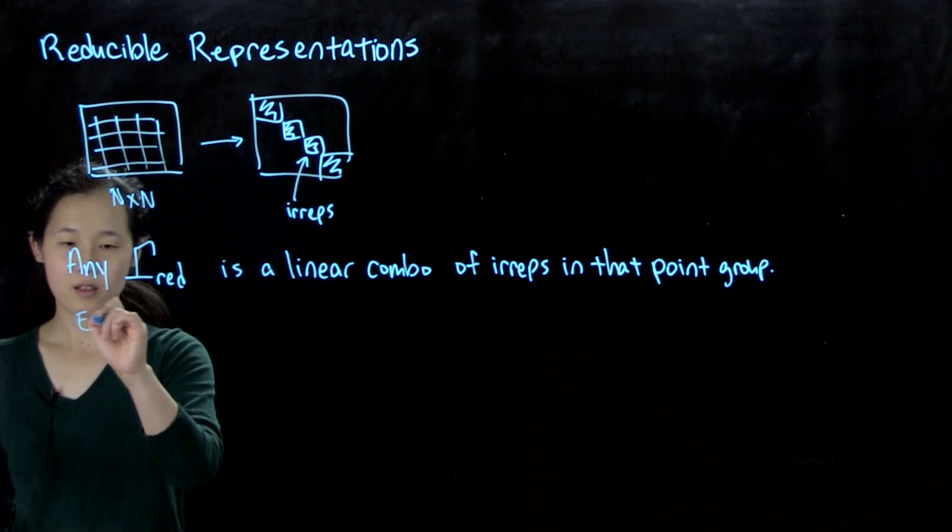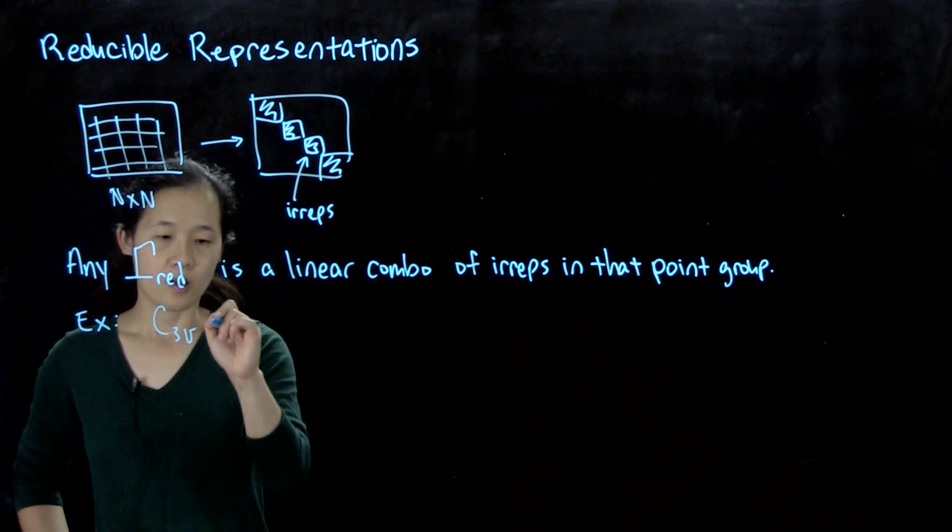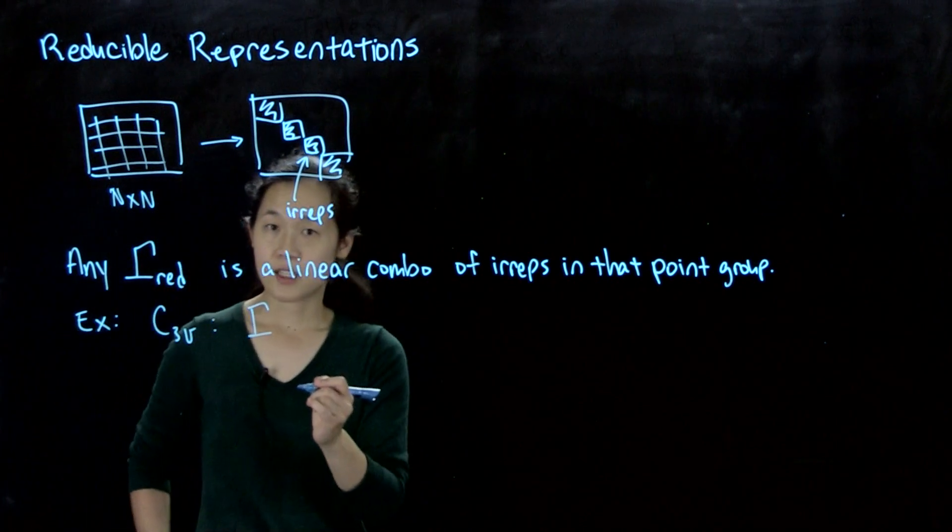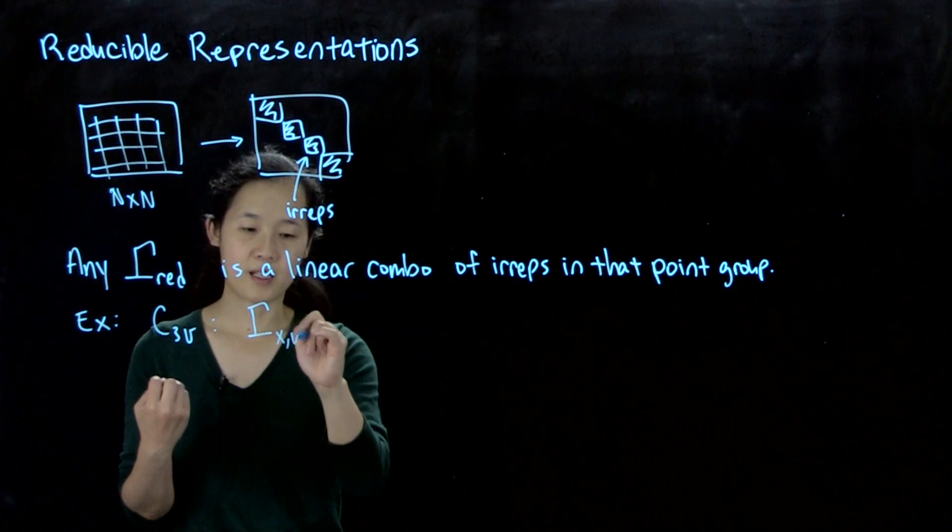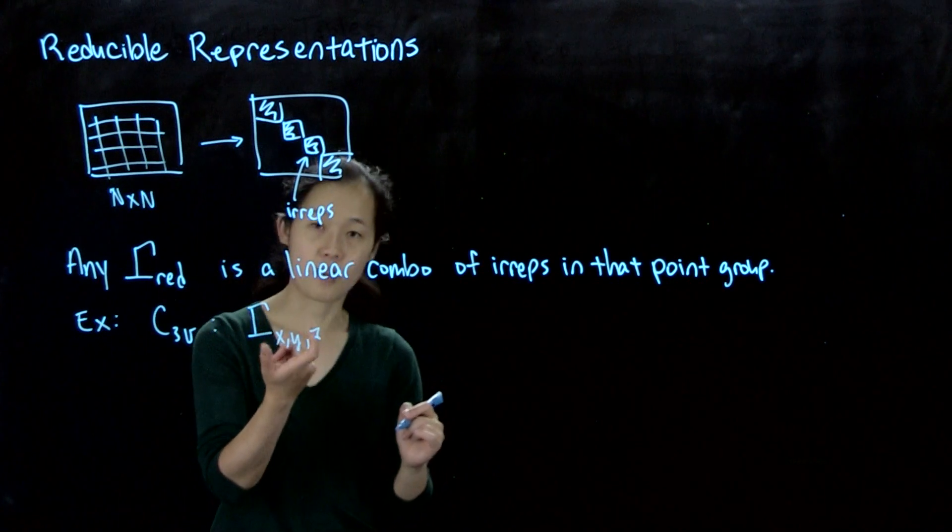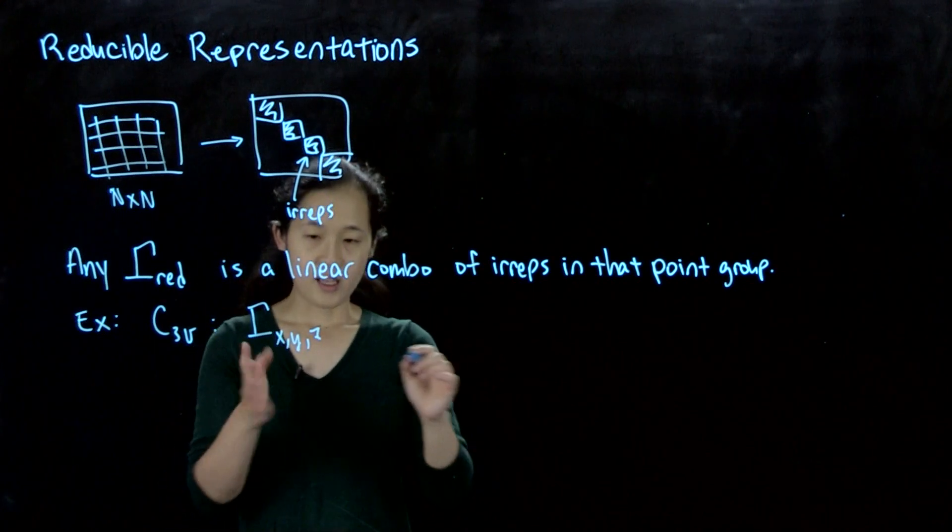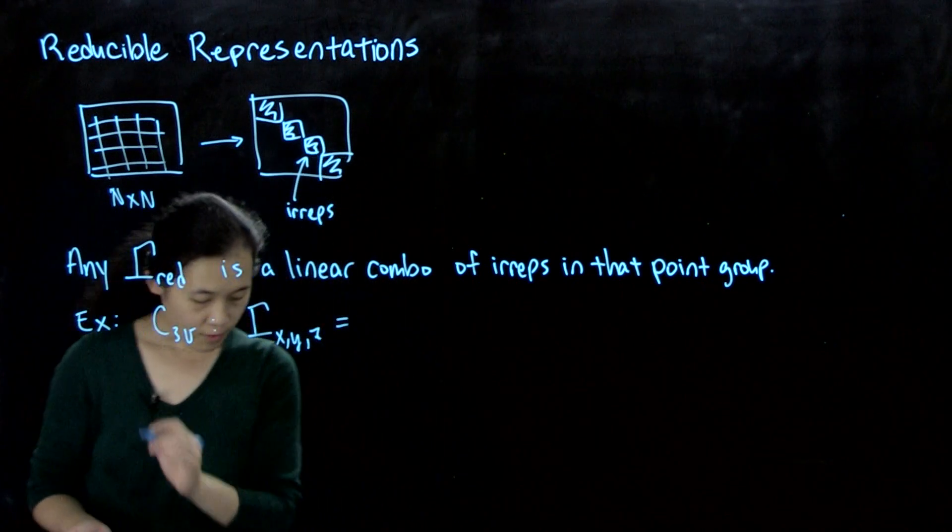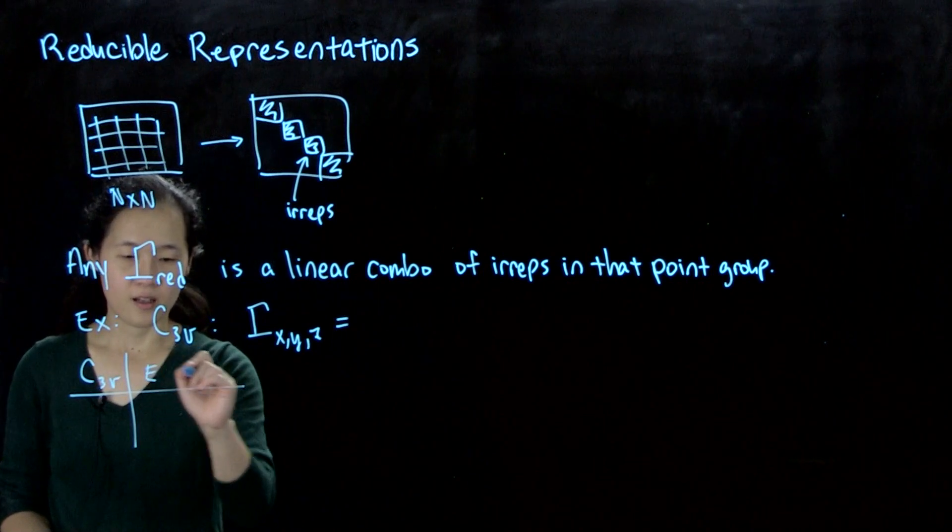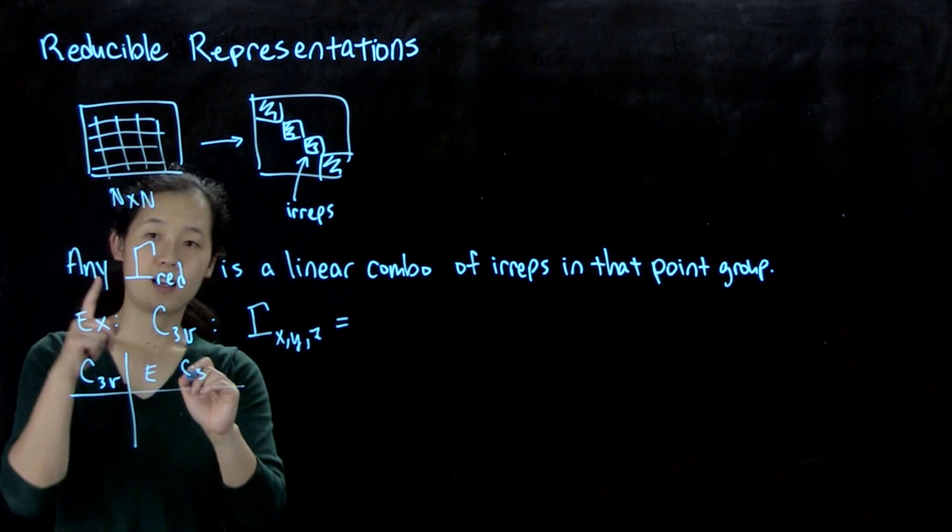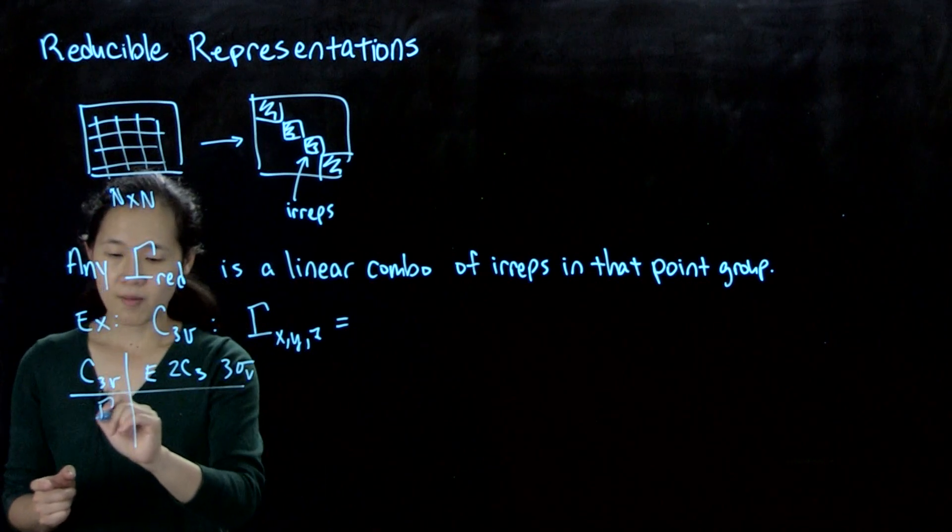We did C3V in our last video. We knew that the reducible representation, the traces of the symmetry operations for the three by three matrices corresponding to x, y, z for the order three basis. This is going to be something that we found in our C3V representation. C3V has three classes: E, 2C3, and 3 sigma v. Our gamma x, y, z, if you remember, was 3, 0, 1.